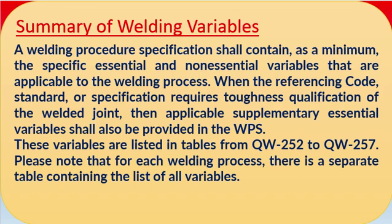These variables are listed in tables QW-252 to QW-257. If you go to ASME Section IX, from QW-252 to QW-257, all the variables are mentioned there in each table according to each welding process. Please note that for each welding process there is a separate table containing the list of all variables.